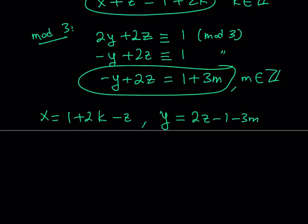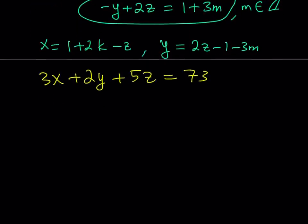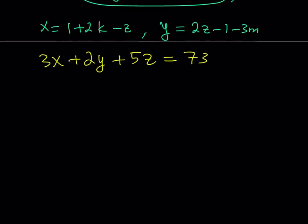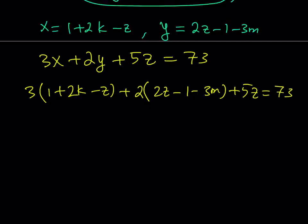Now I have x and y in terms of z and m and k. So let's go ahead and plug all these into the original equation. What was my original problem? It was 3x plus 2y plus 5z is equal to 73. So now I'm going to substitute. x replaced with 1 plus 2k minus z, y replaced with 2z minus 1 minus 3m, and of course, leave the z alone. Now, notice that everything is in terms of k, z, and m.